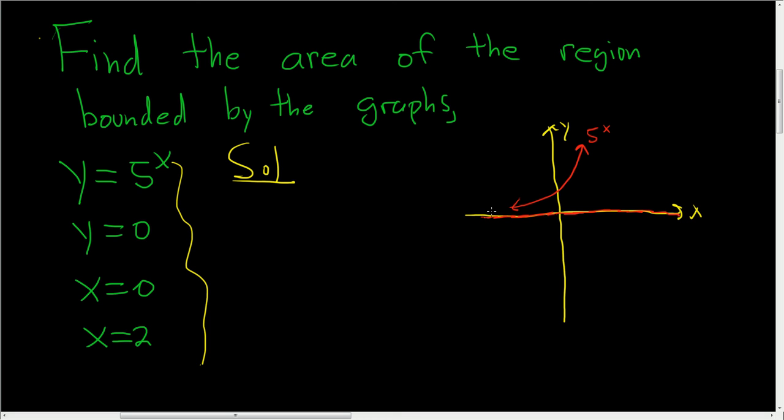And x equals 0, that's the y-axis, that's this purple line here. And x equals 2, that's 1, 2, so that's going to be right here. So it looks like, well that's supposed to be a straight line. So it looks like the region is this blue region here.